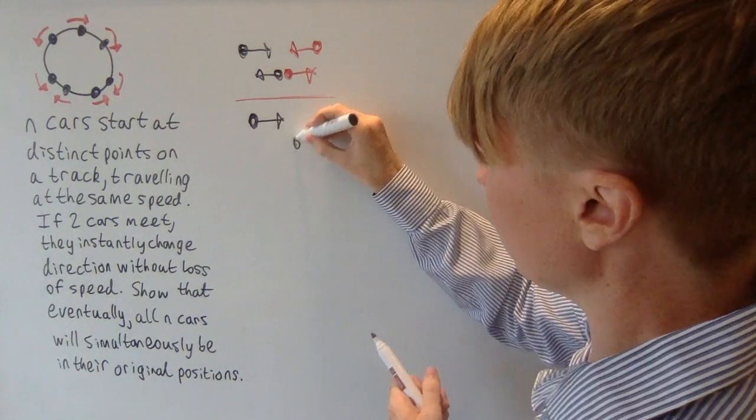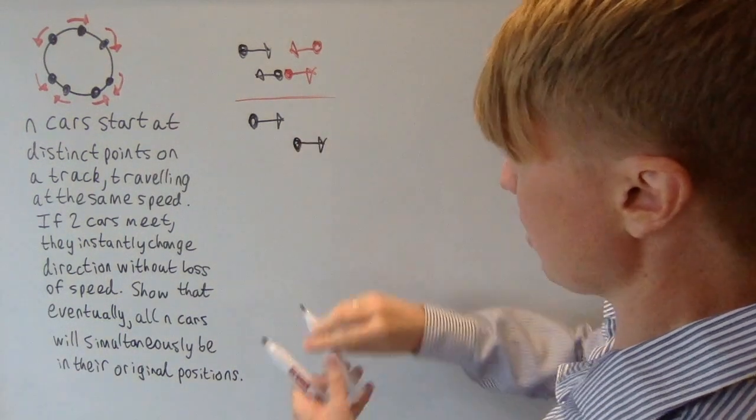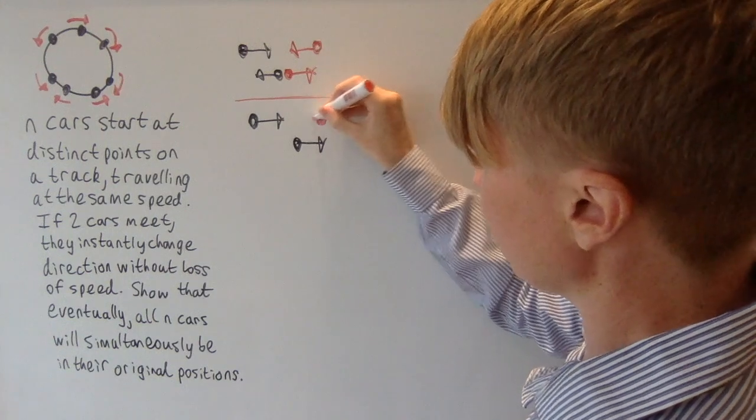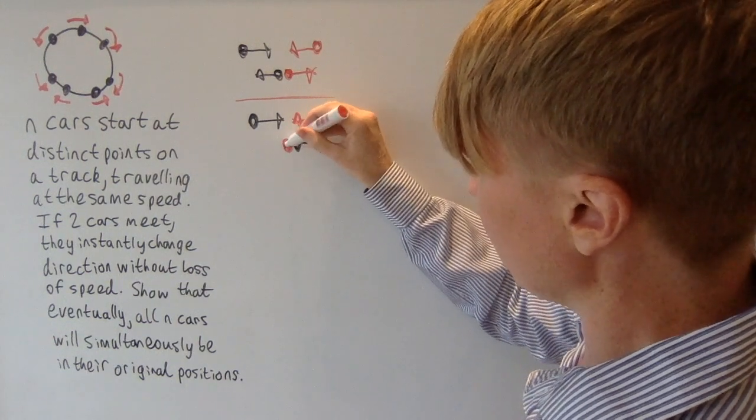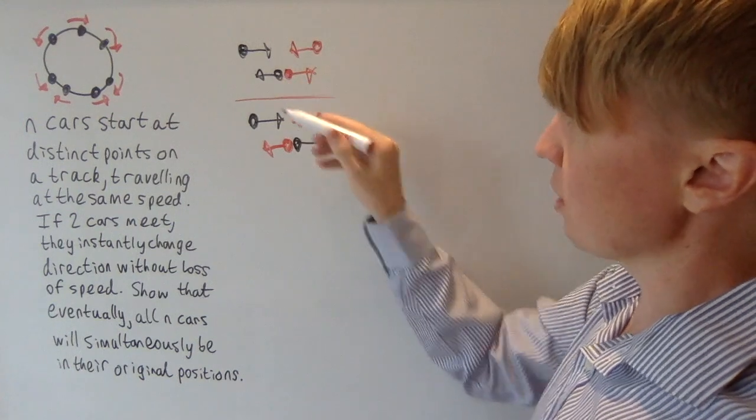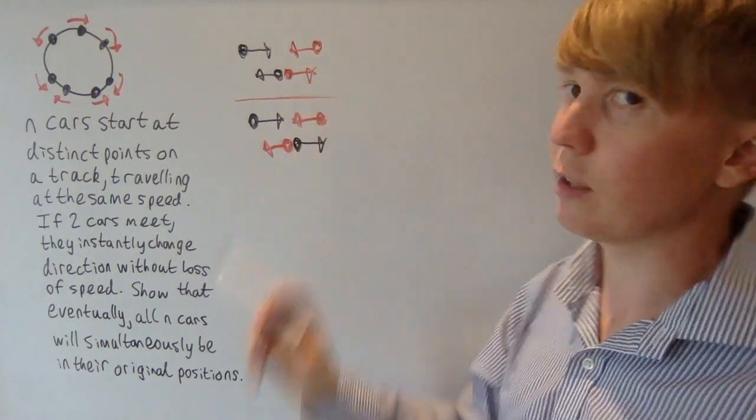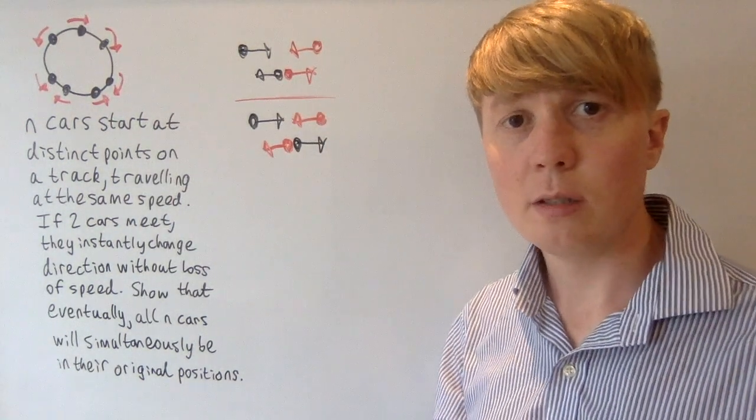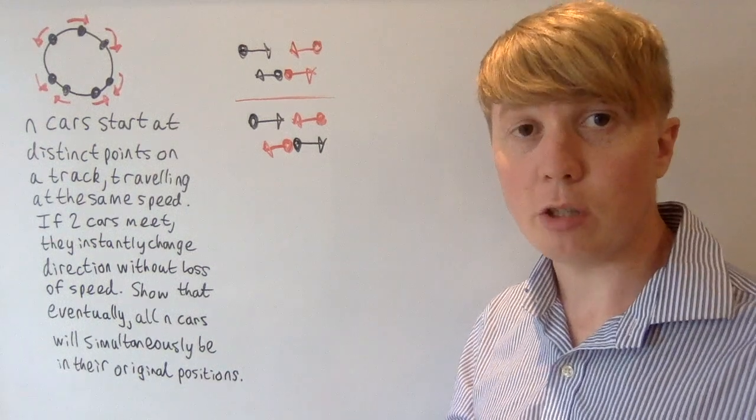the black car starts off, and then when they collide, let's say that they just pass through each other. So once they collide, you can see this red car is now travelling in the same sort of position and direction as the black car was. But of course here we do care which car is which,